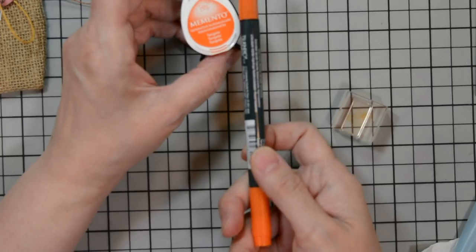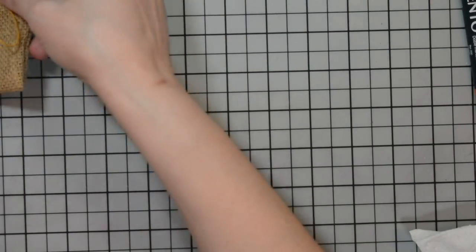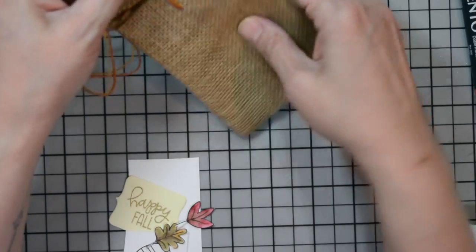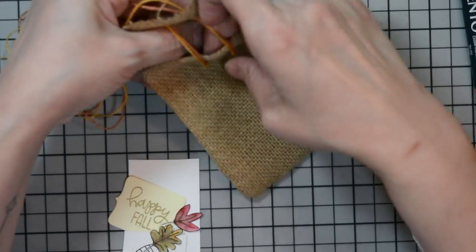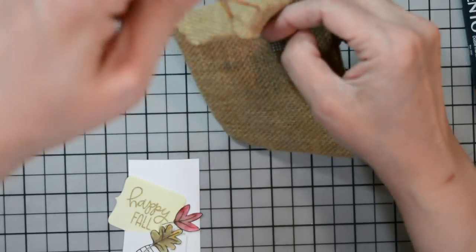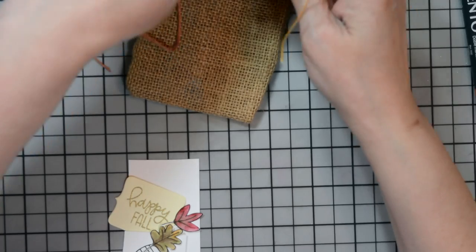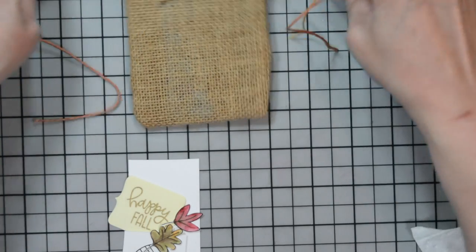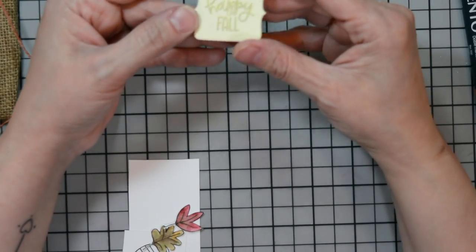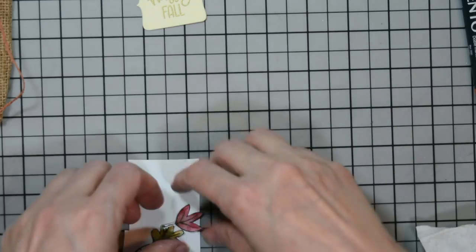We're going to be using that technique today in our project. For our project, we'll need a burlap bag, which you can find at your local craft store. I'm going to place a little treat in it right away so I don't forget to do it. I went ahead and stamped some of my leaves and pumpkins ahead of time. I also stamped my sentiment, which I heat embossed with our gold embossing powder. It reads, happy fall.